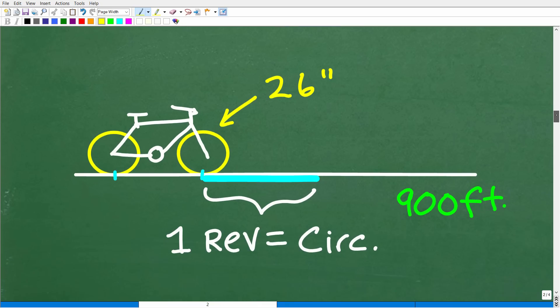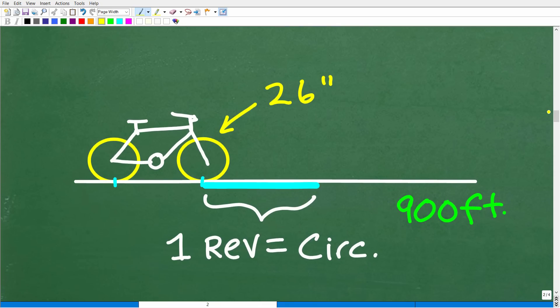So now that we understand the situation, here's Ed's bike. He's going to be riding 900 feet. And we know that one revolution is effectively equal to the distance of the circumference of the tire. And now we're going to have to address some units of measure, because here our tire diameter is in inches, and the distance it's going to be traveling is in feet.